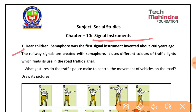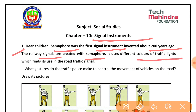Dear children, pyaare bachyo — Semaphore was the first signal instrument, invented about 200 years ago. Samapur pahla signal instrument tha jo 200 saal pahle invent kiya gaya tha. Railway signals were created using semaphore, and it uses different colors of traffic lights, which find use in road traffic signals.